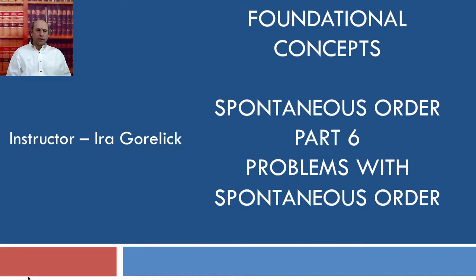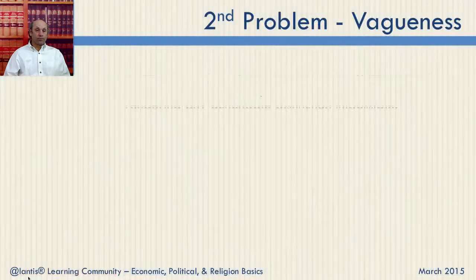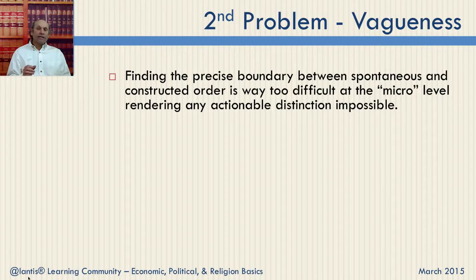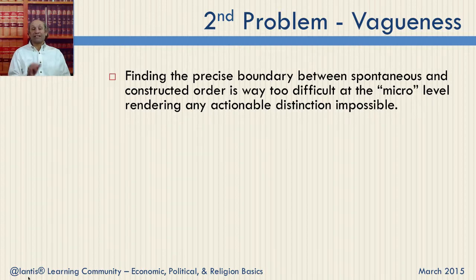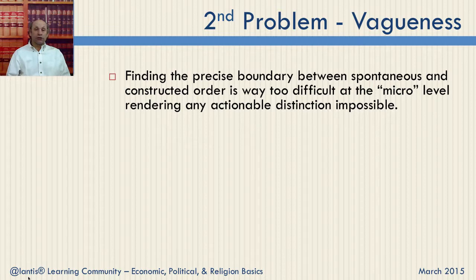Hi, this is Ira Gorlick, and this is part six of my discussions about spontaneous order. In this lecture, I'm going to talk about the second problem I have with the concept of spontaneous order: finding the precise boundary between spontaneous and constructed order is way too difficult at the micro level, rendering any actionable distinction impossible.